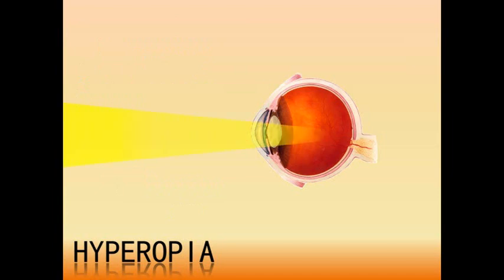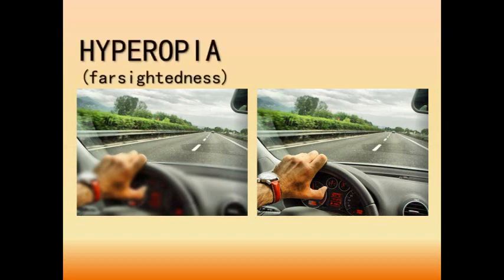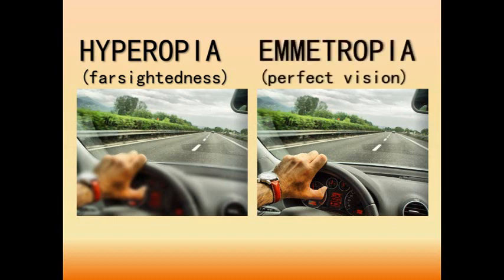Hyperopia can be corrected by a convex spherical lens, or plus spherical lens. The image on the left simulates what a person with hyperopia could see, and the image on the right shows what things look like for a person with perfect vision.